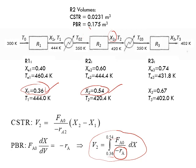The answers are: if it was a CSTR, V = 0.0231 cubic meters; if it was a packed bed reactor, V = 0.175 cubic meters. As you can see, the volume of the CSTR is much smaller, because the reactor is operating at a higher rate of reaction.